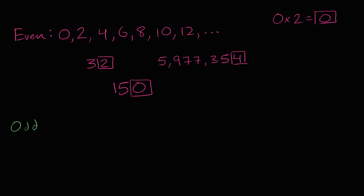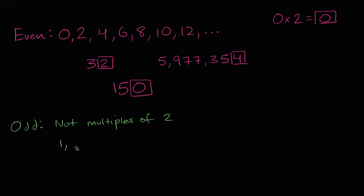So what are odd numbers? Well, one way to think about them is they're the numbers that aren't even — not multiples of two. So what are some examples of odd numbers? Well, one, three, five, seven, nine — and of course you can go on and on and on.